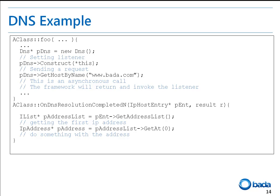Sending a request to get the host by name: first, construct and initialize an object of the DNS class. Then, using GetHostByName, request a DNS lookup using the host name. This method is asynchronous. OnDNSResolutionCompletedN is used to notify the result of the DNS request.